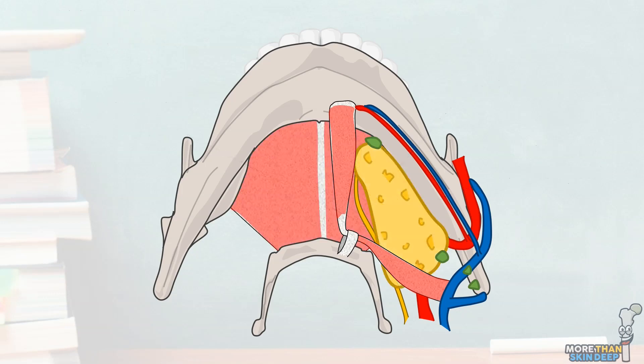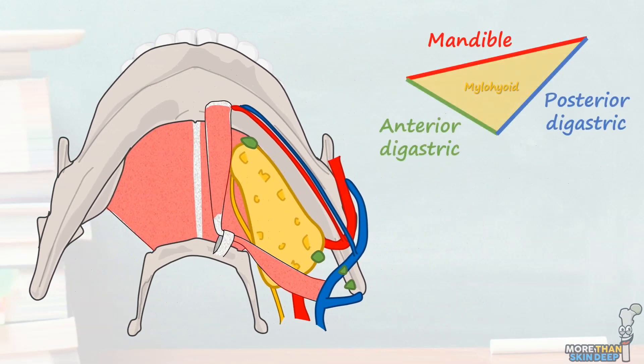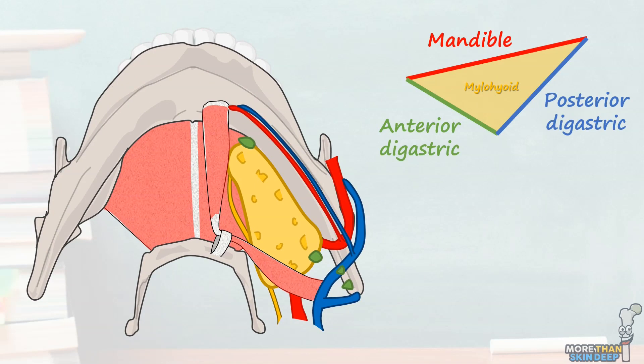And there we go, that's all the relevant anatomy of the submandibular triangle of the neck. This is an important region to surgeons and is an area frequently examined during your studies so I suggest taking some time to learn it well.